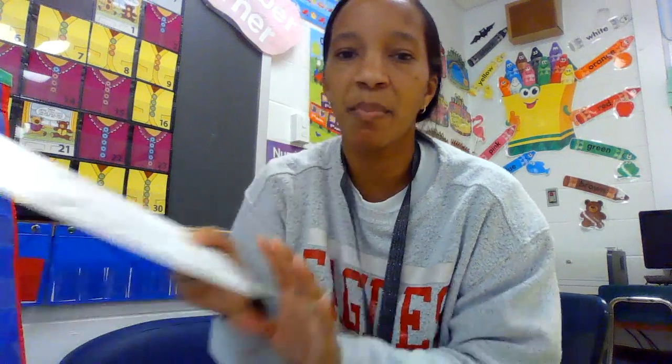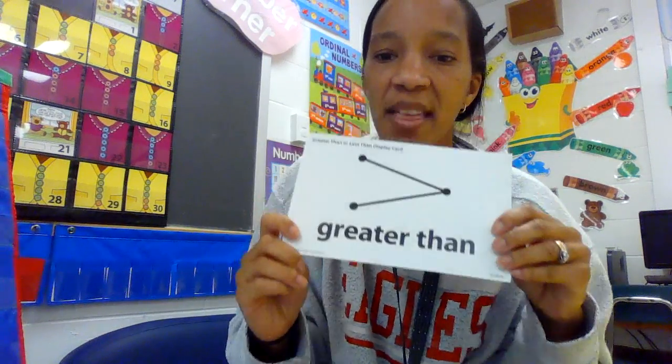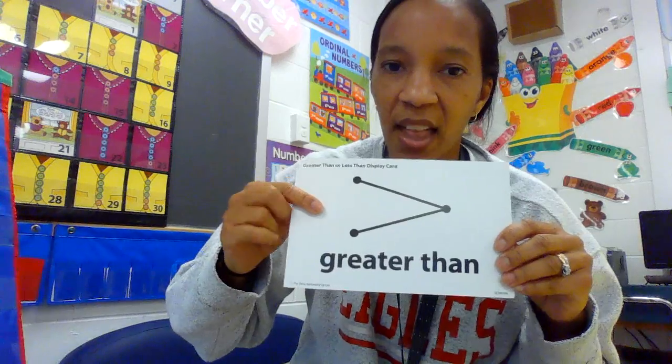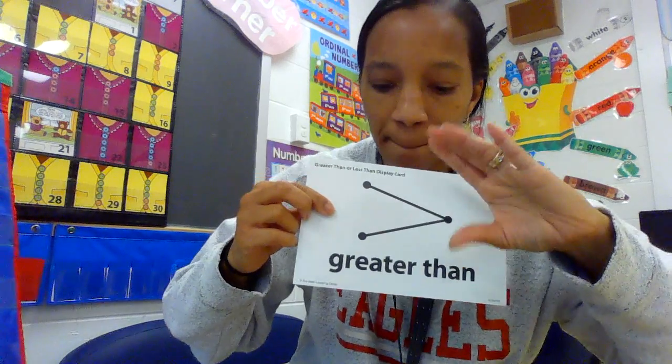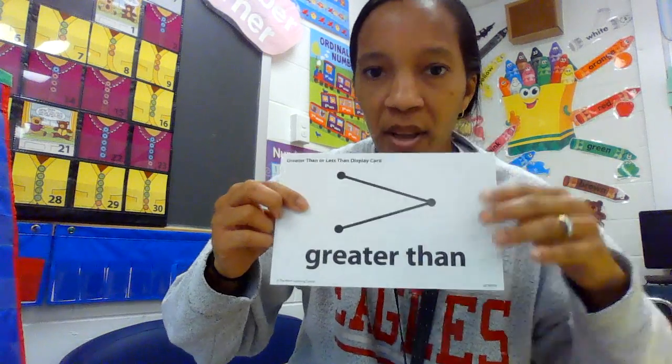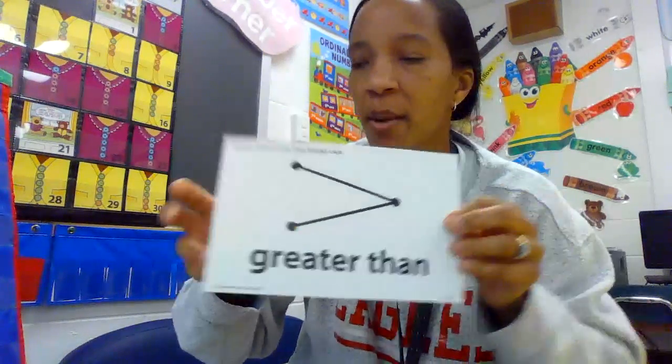So the opposite of less than would be greater than. That means the bigger number is on this side for the alligator to eat, and then the smaller number is on this side.